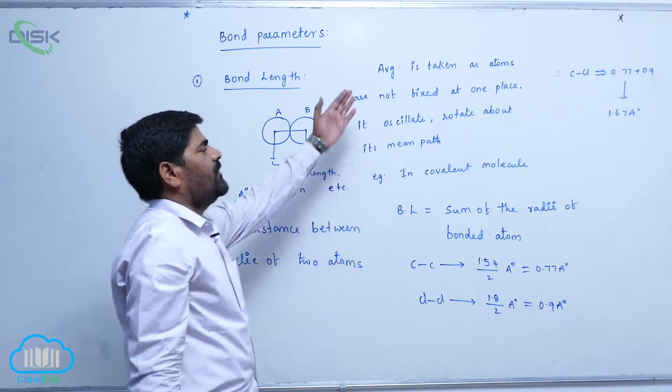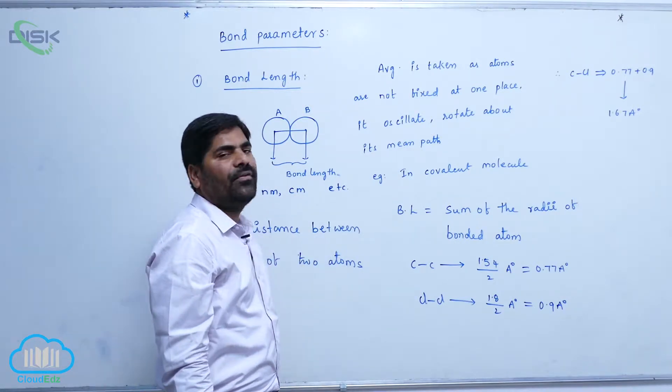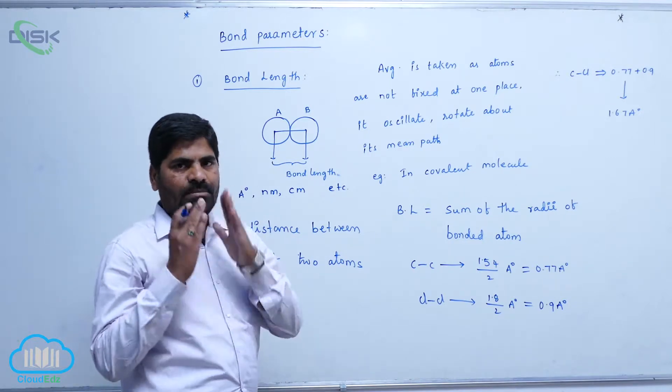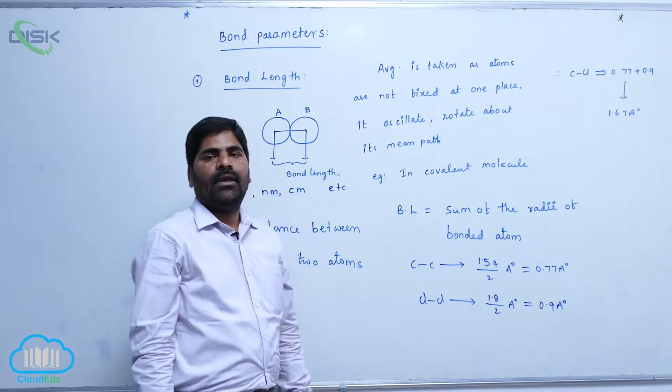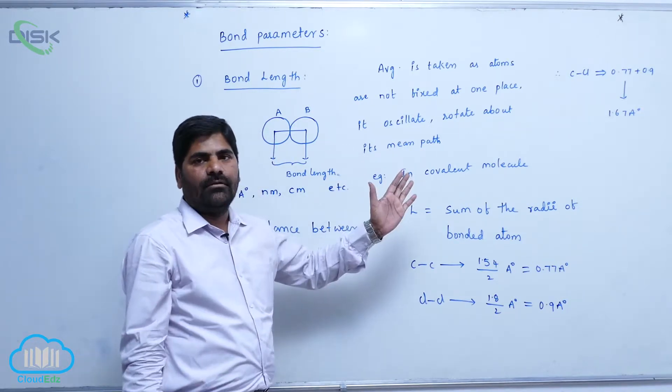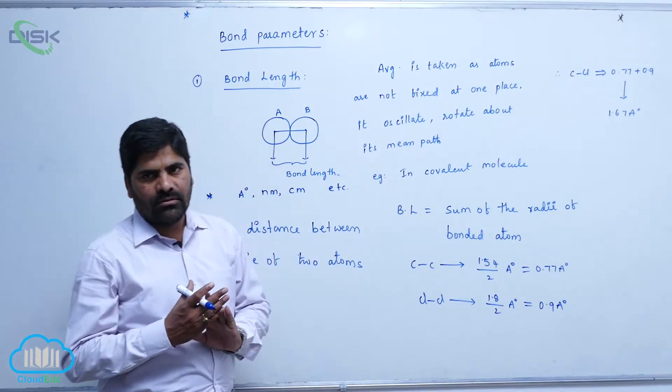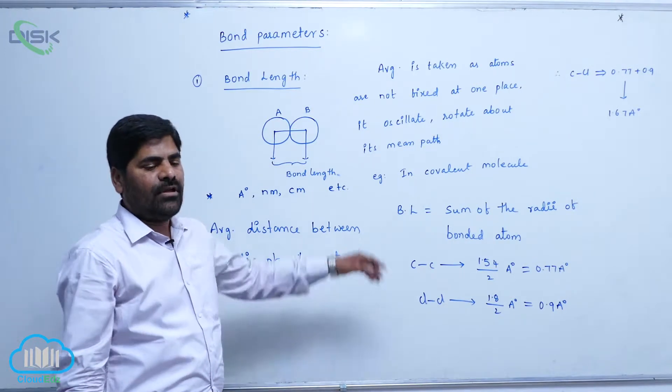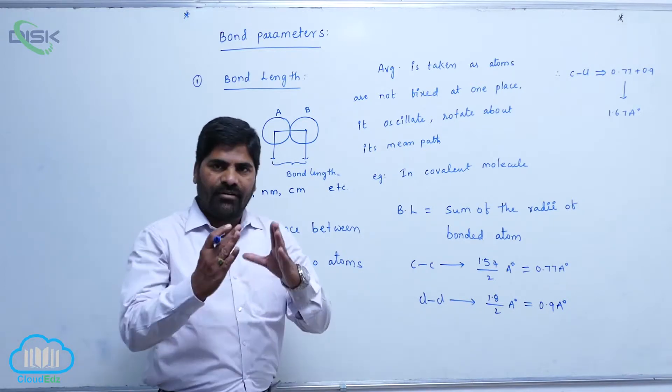The reason for taking average distance of two atoms is atoms are not fixed at a particular place. These are oscillated, rotated from its main path. So that is the reason why we should take average distance.